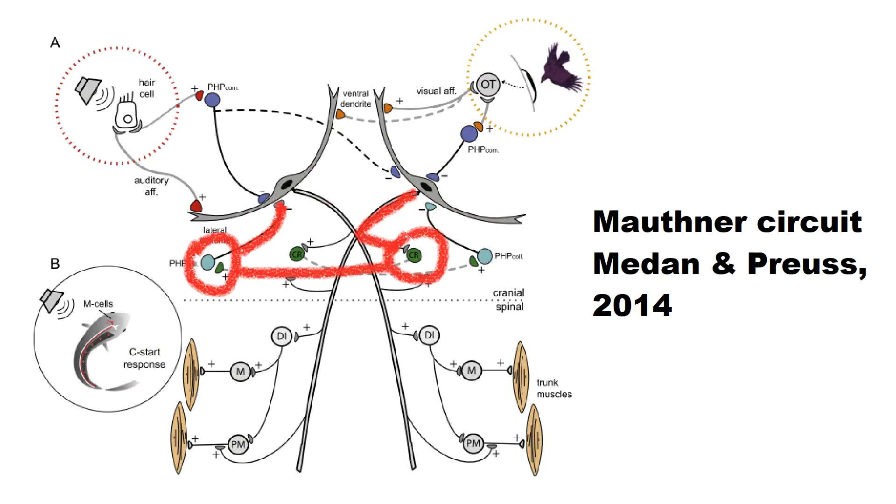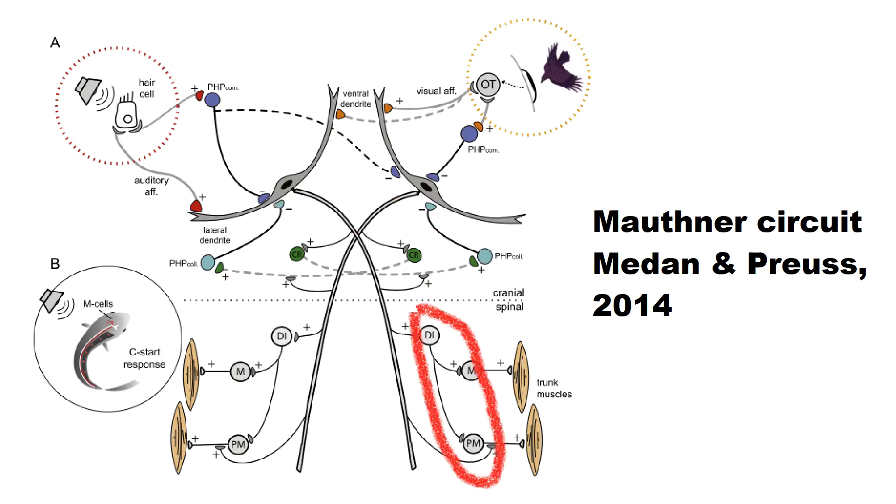The Mauthner cell on the left side of the brain inhibits the Mauthner cell on the right side of the brain and vice versa. The signal from the Mauthner cell then reaches the motor neuron in the spinal cord and the muscles in the tail of the fish.